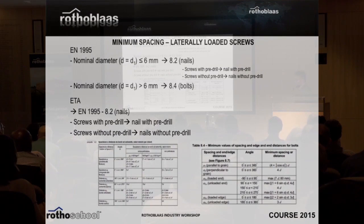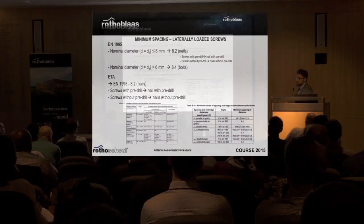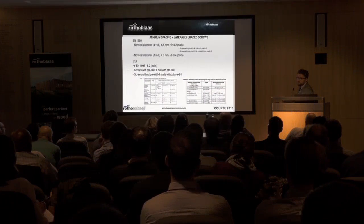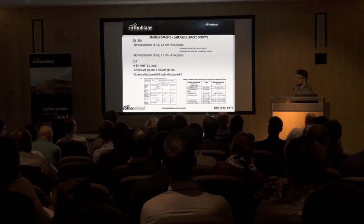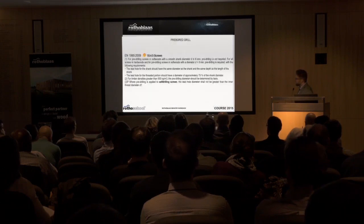All the prescriptions in the Eurocode are given according to the direction of the grain and are expressed as multiples of the screw diameter. So for an 8 mm screw you need like 4 diameter distances along the grain — that means 4 × 8 = 32 mm.